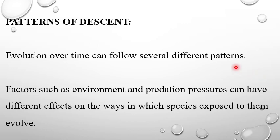Now, I will discuss about the patterns of descent. Evolution over time can follow several different patterns. Factors such as environment and predation pressures can have different effects on the ways in which species exposed to them evolve. This means that factors like environment, geological disaster, predation pressures, all these are factors for species selection and evolution.